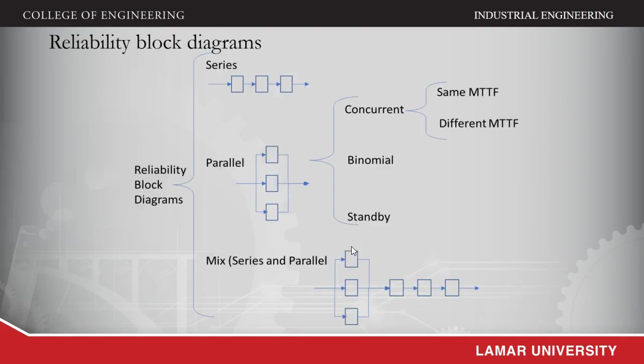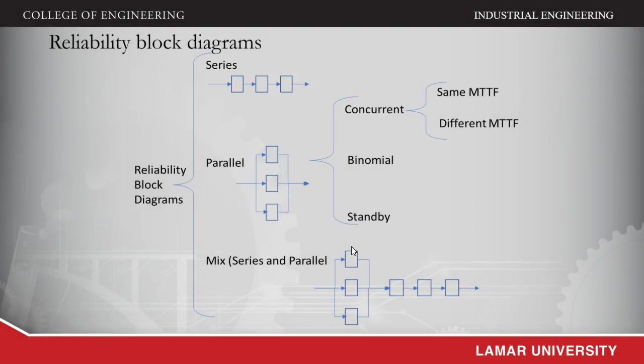When we have more than one component, we can integrate the behavior of these systems depending on the nature of how these components perform and are part of the system. When we have elements in series, all of them have to be present. If you understand this as a signal traveling from left to right, the signal will be interrupted if one of the components is not working properly. So we need all of them working, and the risk becomes larger.